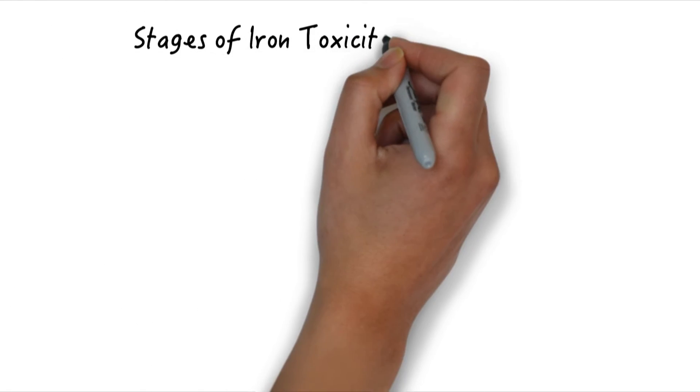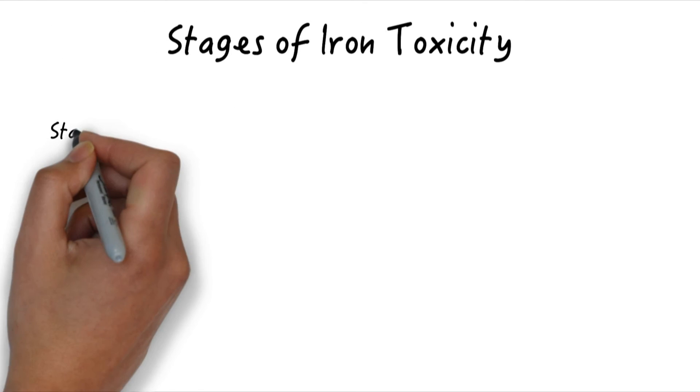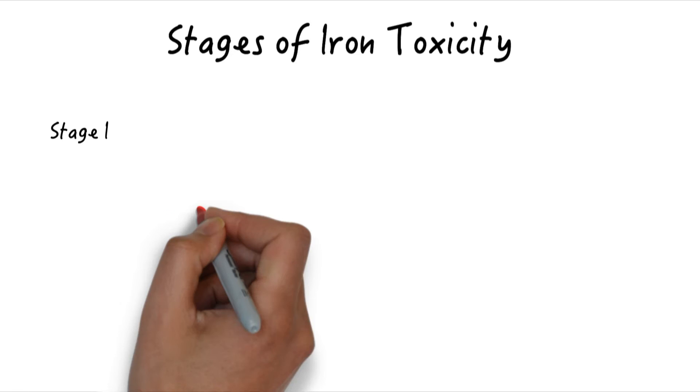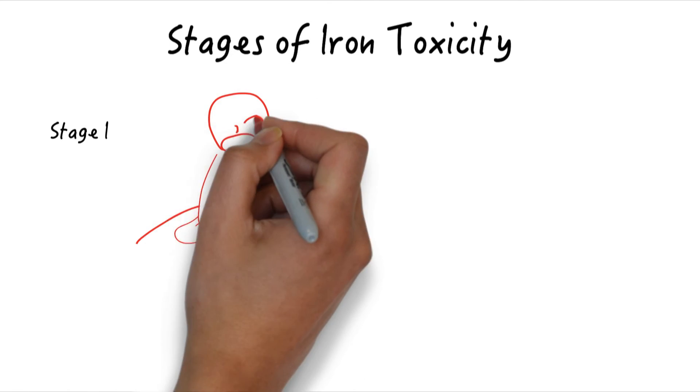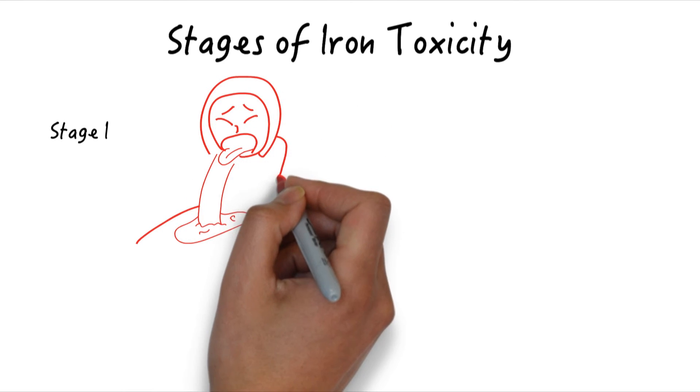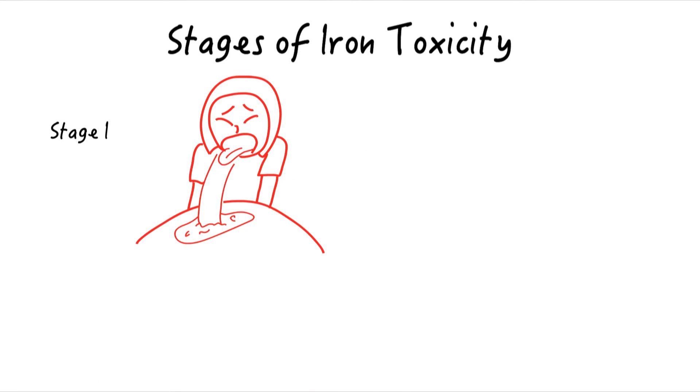There are five stages of iron toxicity. The first stage is characterized by nausea, vomiting, abdominal pain, and diarrhea. Dehydration contributes to the ill appearance and hypotension in the iron-poisoned patient. With significant GI symptoms, including hematemesis or hematochezia, blood loss can contribute to hypotension. If there are no GI symptoms in the first six hours of ingestion, serious iron toxicity is unlikely.